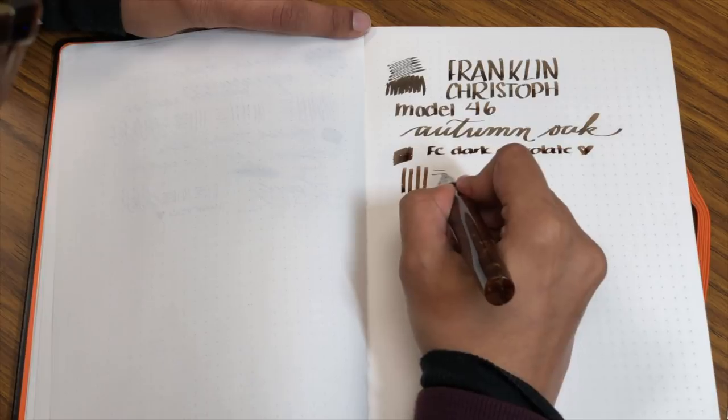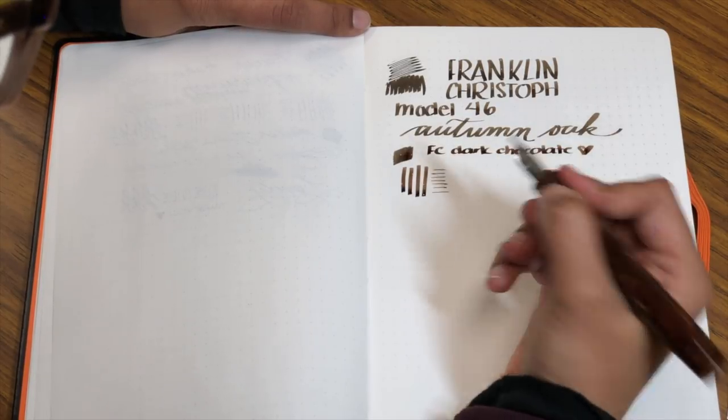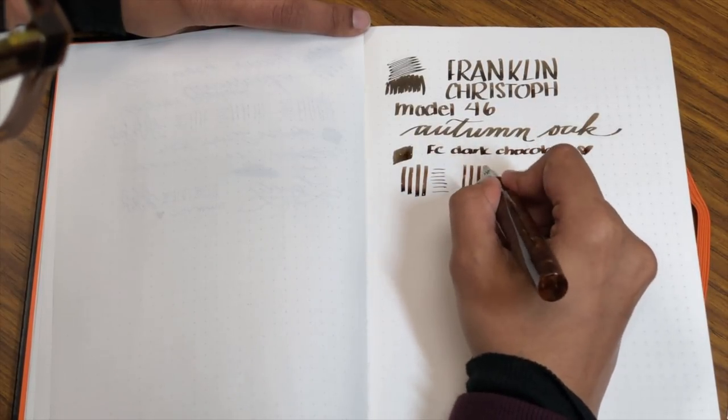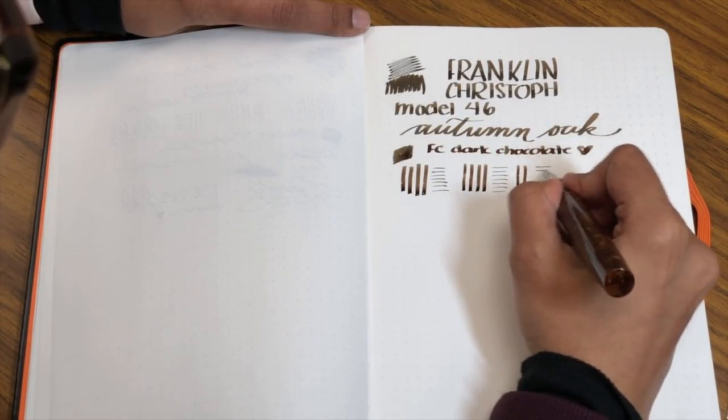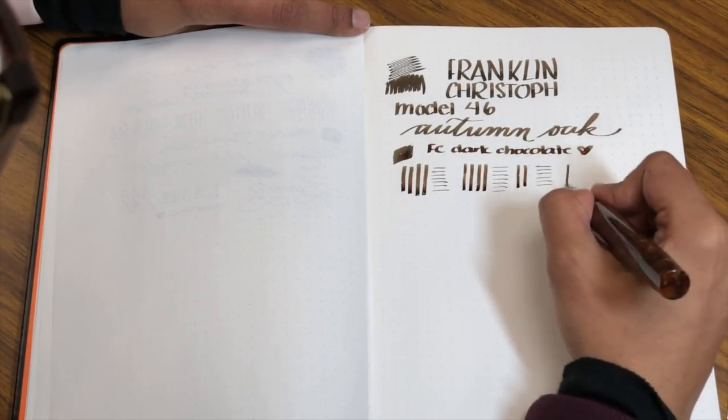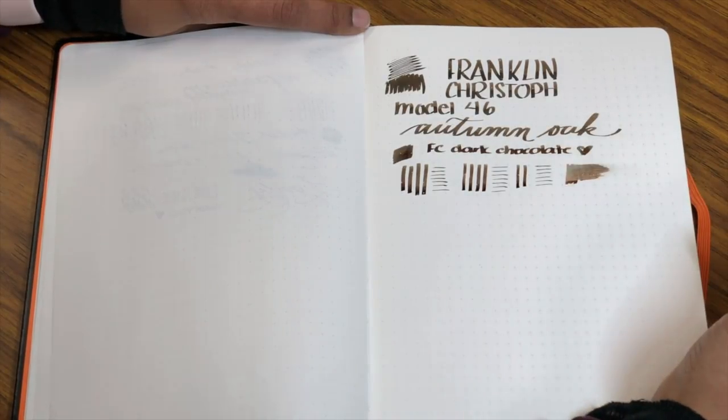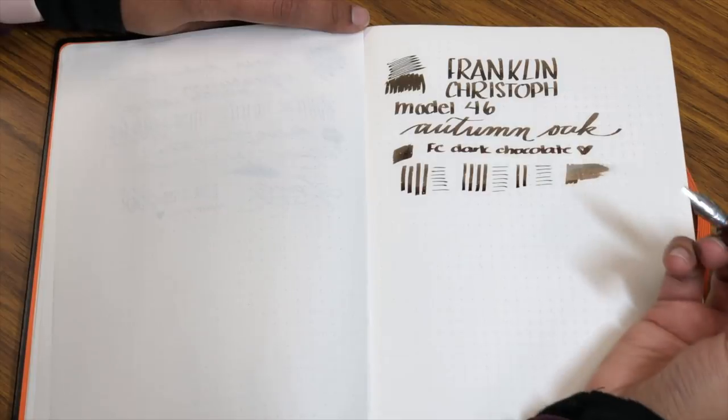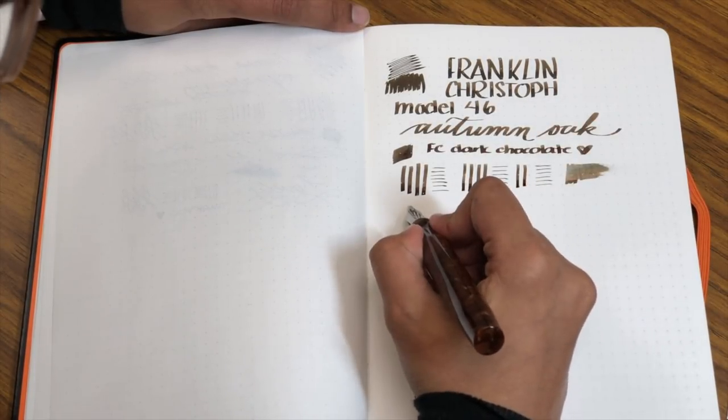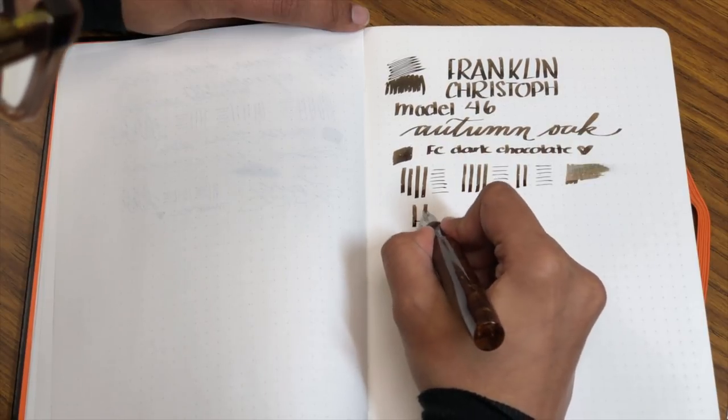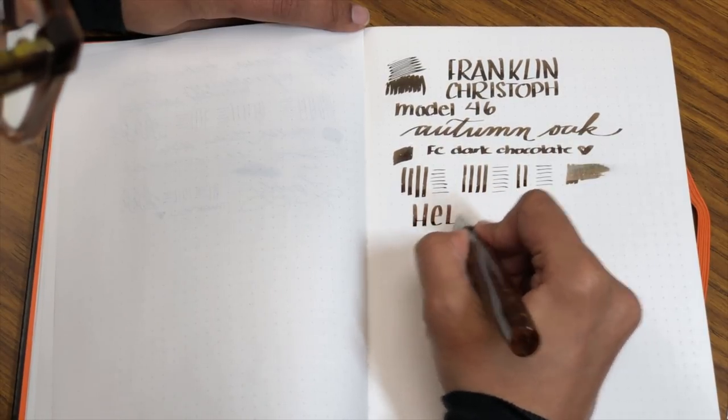Now, as for line variation, because it is a music stub, untipped, you get really fairly broad downstrokes, like 1.9 millimeters, and thin cross strokes. Pretty wet writer. It's not a gusher the way it's set up right now, which you might prefer. And you've got some nice line variation. So even if you're not into calligraphy, it can be really fun for hand lettering. But if you are into calligraphy...